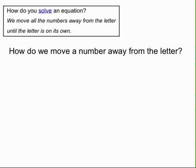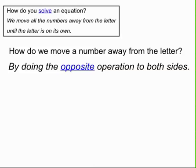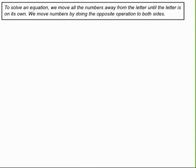So how do we move numbers away from the letter so we can solve an equation? We move numbers away from a letter by doing the opposite operation to both sides. The opposite of a plus is a minus and vice versa, and the opposite of a multiply is a divide. So our guide is: to solve an equation, move all the numbers away from the letter until the letter is on its own, by doing the opposite operation to both sides.